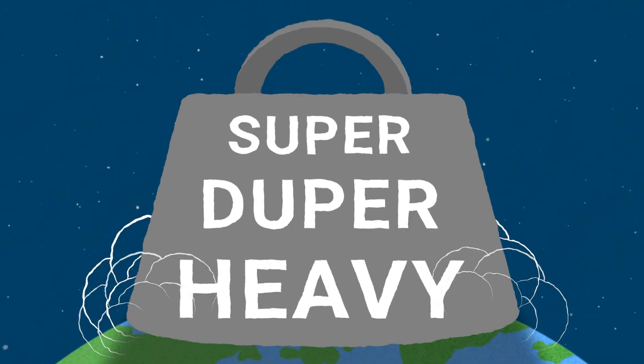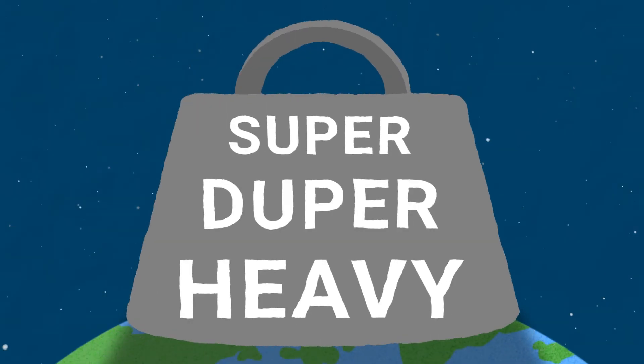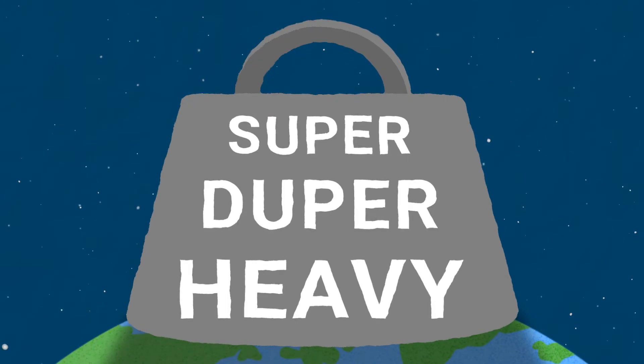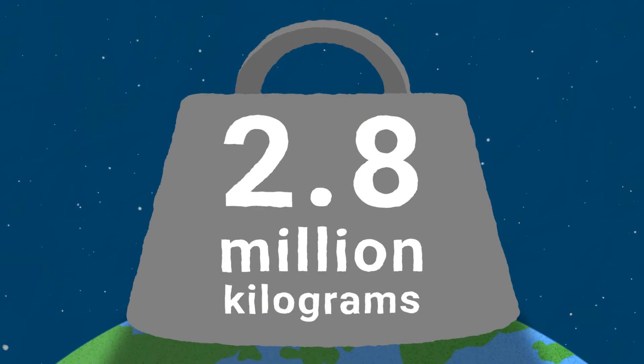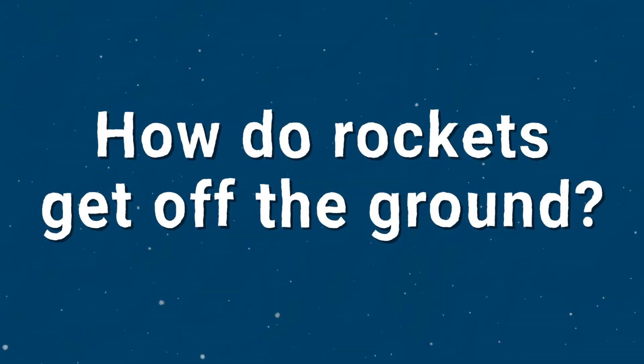As you might have guessed, rockets are incredibly large and heavy. The Saturn V rocket used in the Apollo 11 mission weighed over 2.8 million kilograms. So how do they even get off the ground?